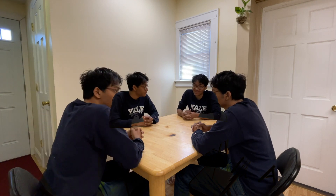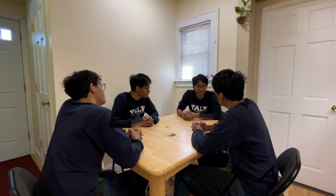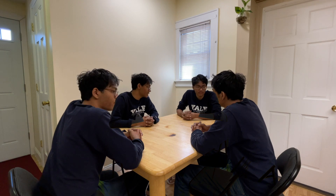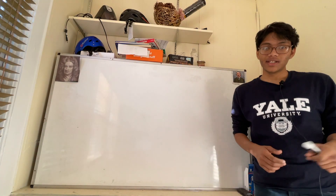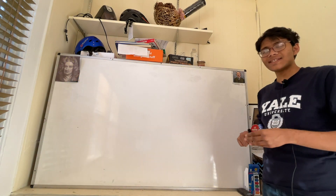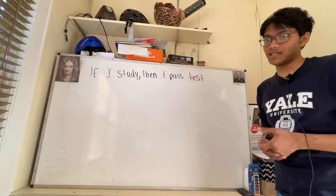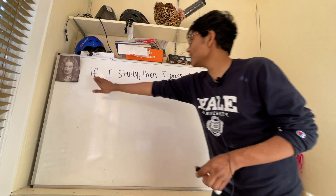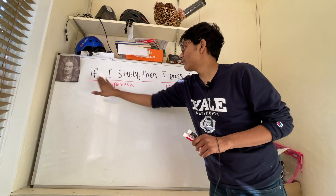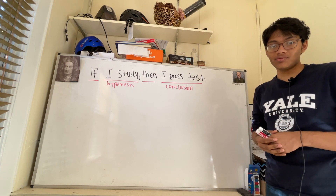If I study then I'll pass the test. If I pass the test then I'll study. If I don't study then I don't pass the test. If I don't pass the test then I don't study. Each of these robots is saying something different. The first one says: if I study then I'll pass the test. This kind of logical statement is called a conditional statement because it has 'if' and 'then' — a hypothesis and a conclusion. If hypothesis, then conclusion.